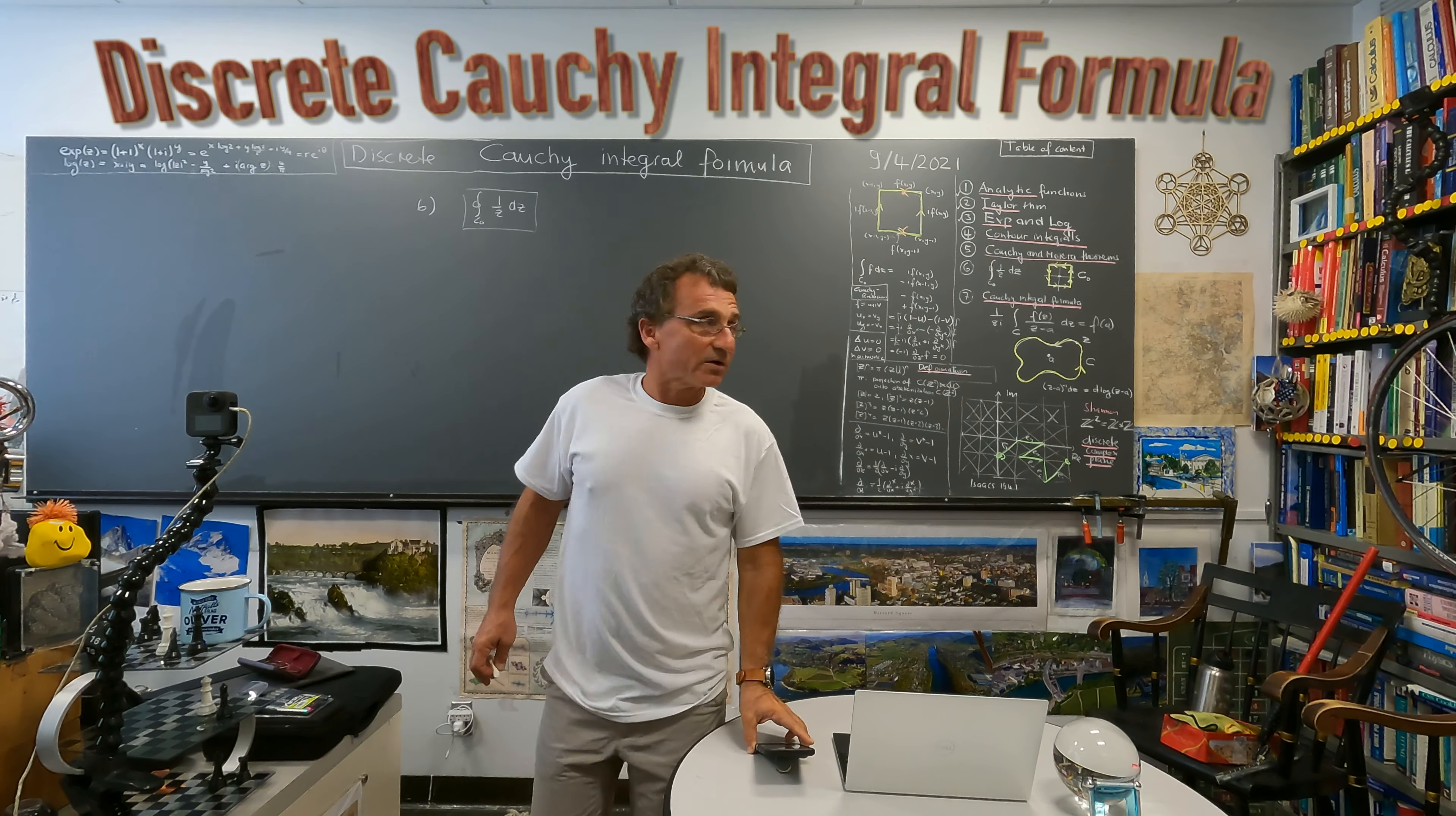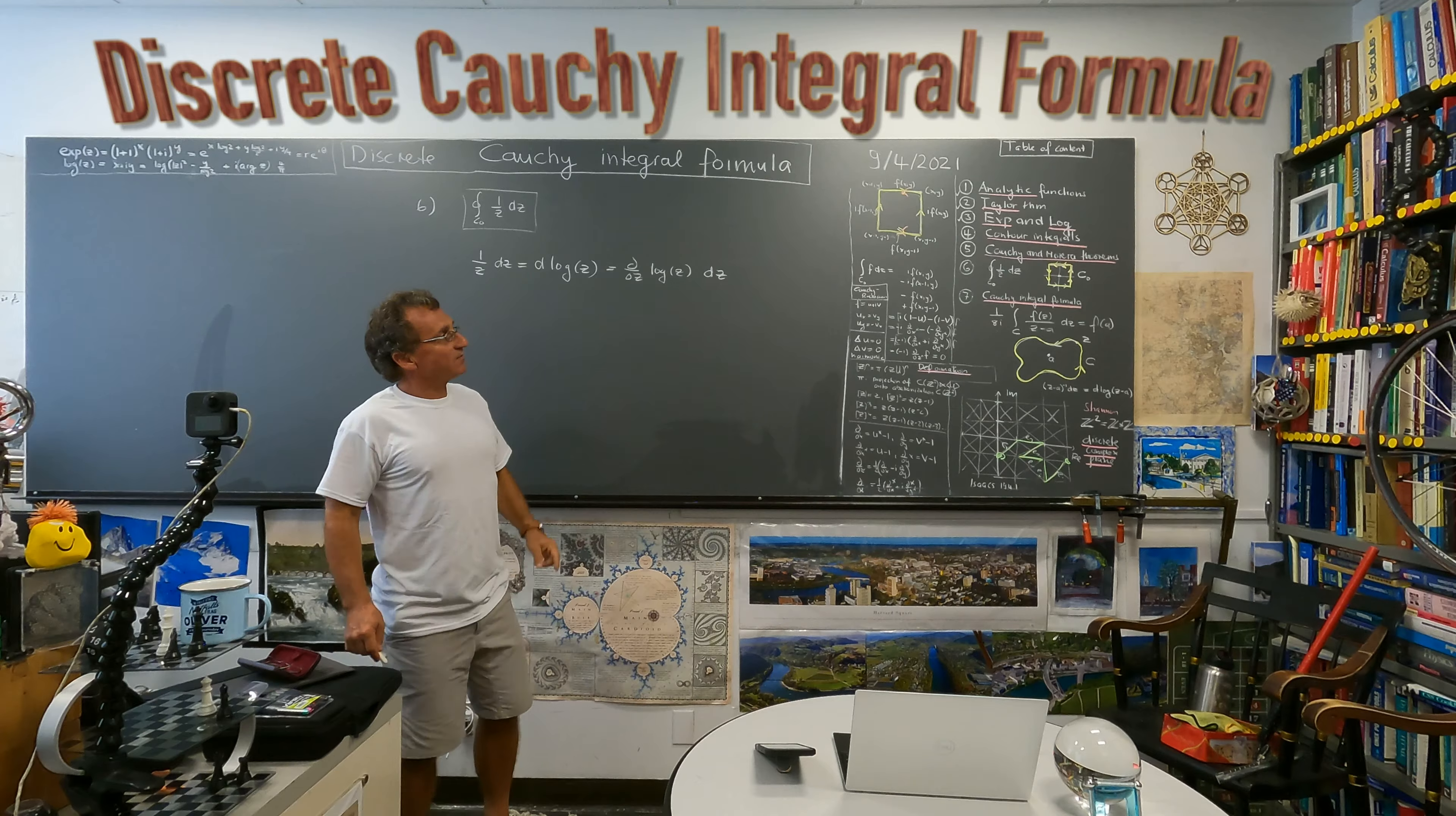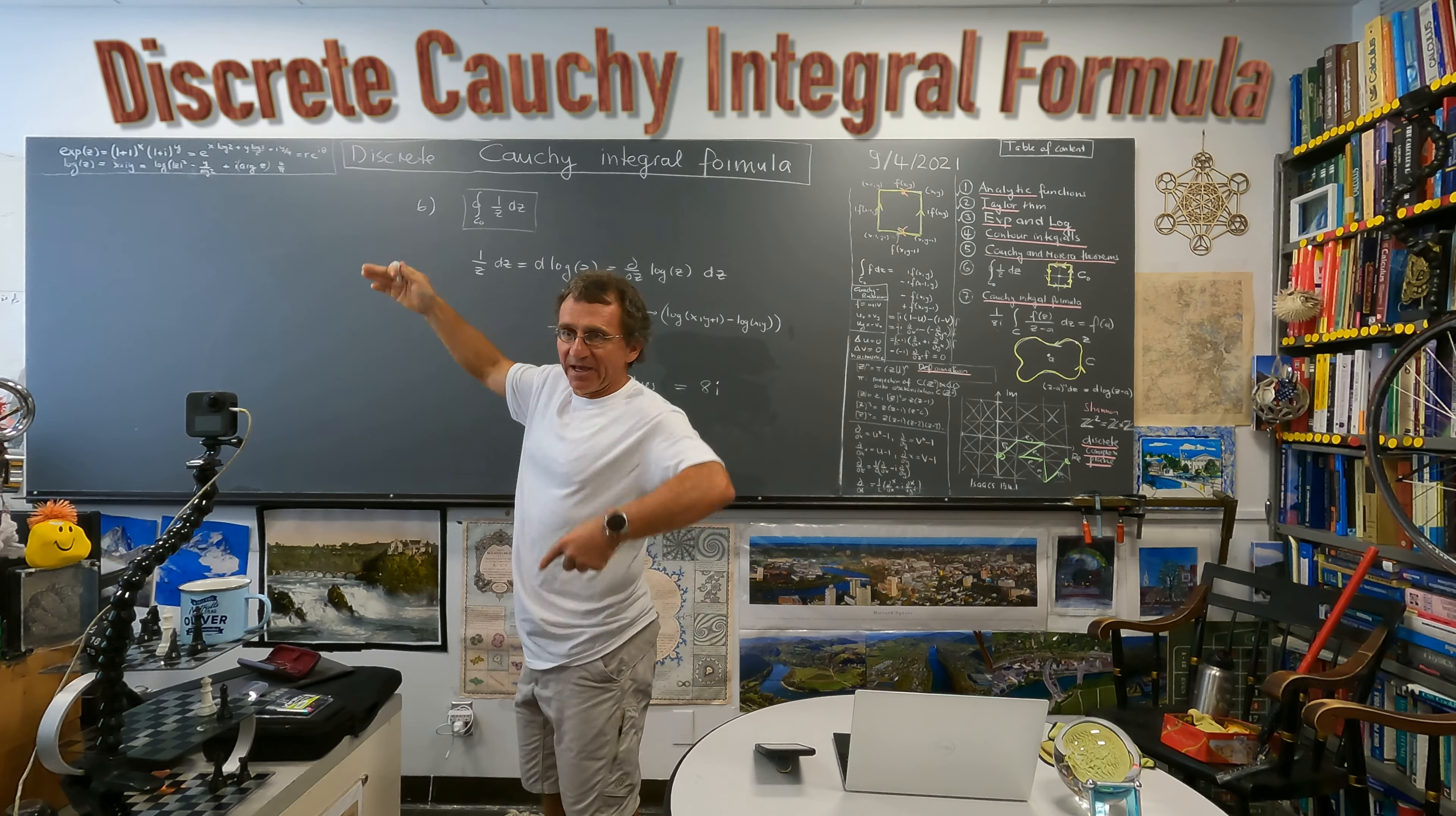So what I'm telling you now is pretty new, this is just in the last week I really see how this really works. So even though I've defined one over z as the derivative of log z. So what we can do is we can take this derivative of the log z which we have explicitly given here which is just a discrete derivative right using the definition.